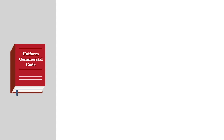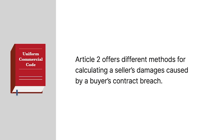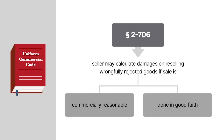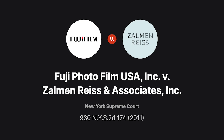Article 2 of the Uniform Commercial Code, which governs sales of goods, offers different methods for calculating a seller's damages caused by a buyer's contract breach. Section 2-706 permits a seller to calculate its damages based on reselling wrongfully rejected goods, if the sale is commercially reasonable and done in good faith. But this provision also contains a strict notice requirement, as a seller learned to its dismay.